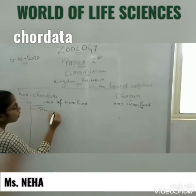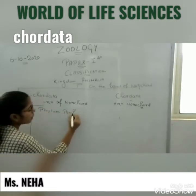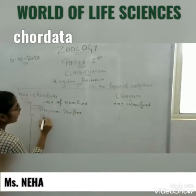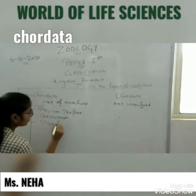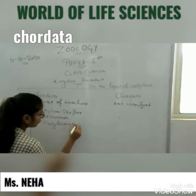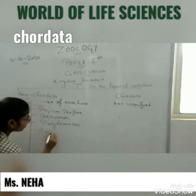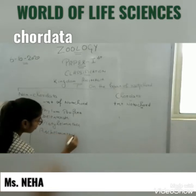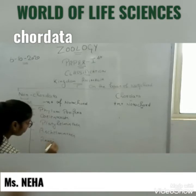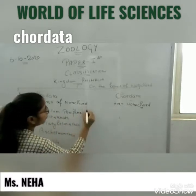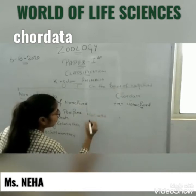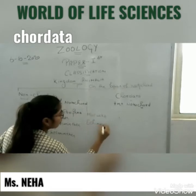In the nine non-chordate phyla: Porifera, Coelenterata, Platyhelminthes, Nemathelminthes, Annelida, Arthropoda, Mollusca, Echinodermata, and Hemichordata. Hemichordata means half-chordate.